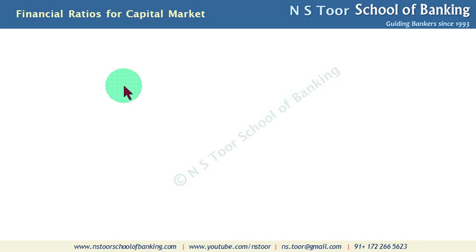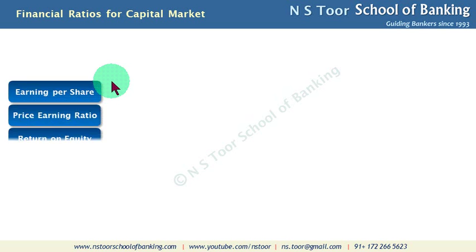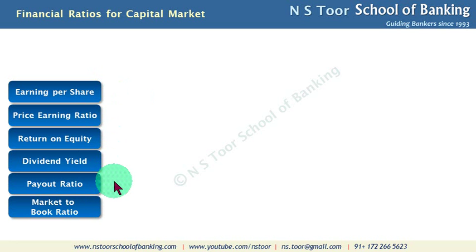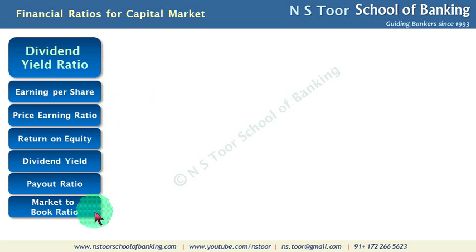Those investors who deal with Capital Market must have understanding of certain important financial ratios. These ratios include Earning Per Share Ratio, Price Earning Ratio, Return On Equity Ratio, Dividend Yield Ratio, Payout Ratio, and Market To Book Ratio.